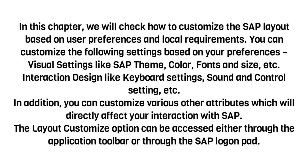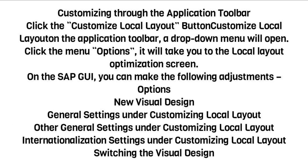The layout customization option can be accessed either through the application toolbar or through the SAP logon pad. To customize through the application toolbar, click the Customize Local Layout button in the application toolbar. A drop-down menu will open; click the menu options and it will take you to the Local Layout Optimization screen.